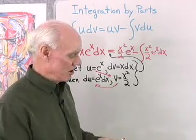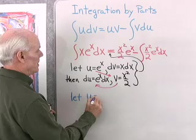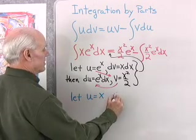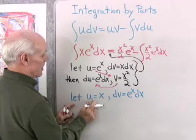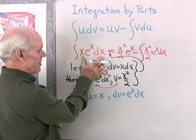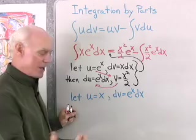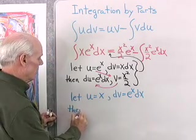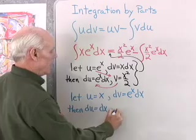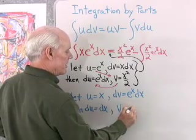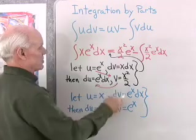Let's try a different substitution and see if we can make this work. This time I'm going to say: let u be equal to x, and then dv will be equal to e to the x dx. Different substitution. Now I just need to check — u dv, does that use everything up? Yes, u dv is going to be x times e to the x dx, that's everything. Du is going to be equal to just dx, and v is going to be the integral of e to the x, which is just e to the x. Let's substitute this back into our original formula.